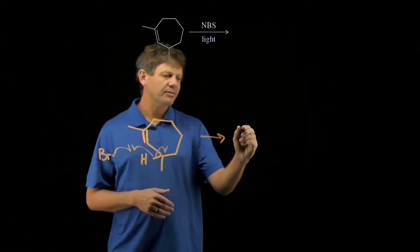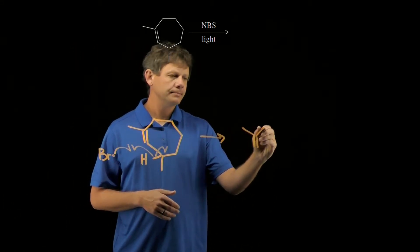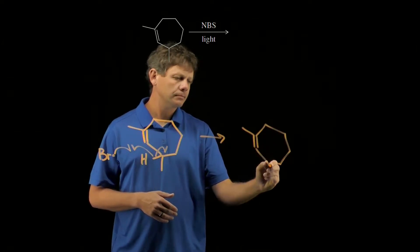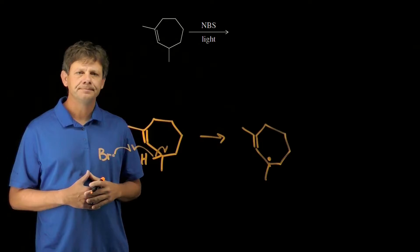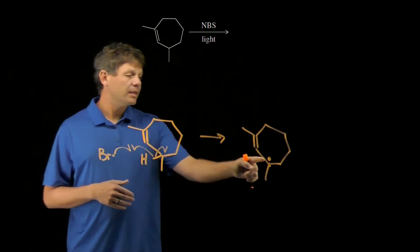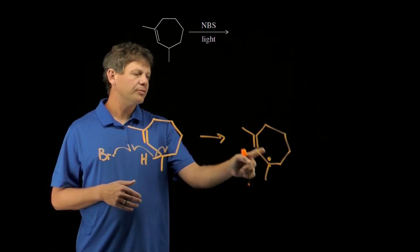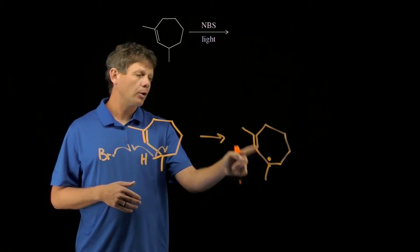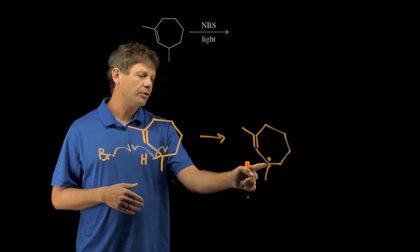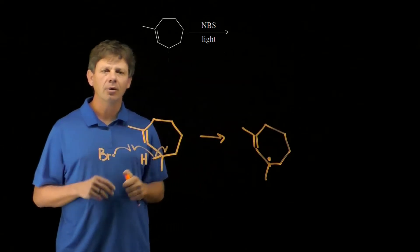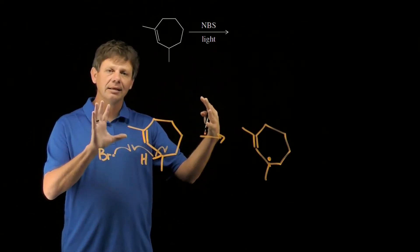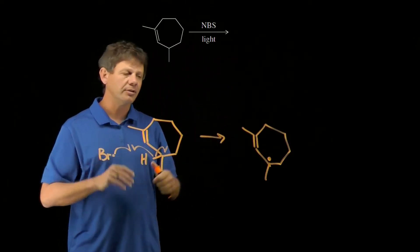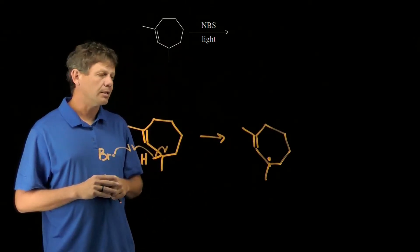That's going to give us this allylic radical, still a seven-membered ring. At this point, we could draw the resonance structure, which shows it going back and forth from this tertiary carbon to this tertiary carbon—not going back and forth in the context of equilibrium, but resonating between the two. Again, using two resonance structures to describe the allylic system.